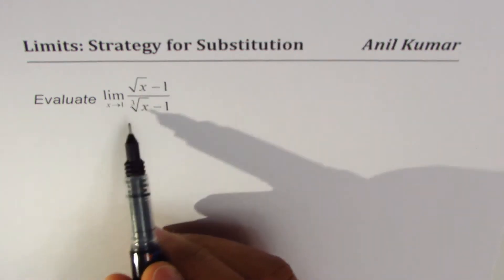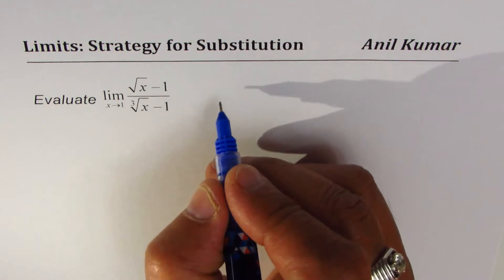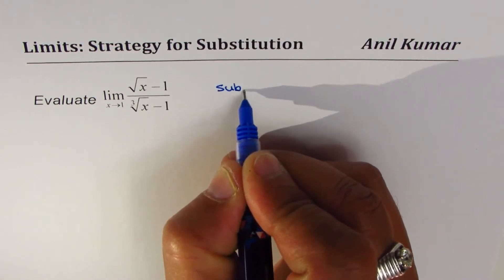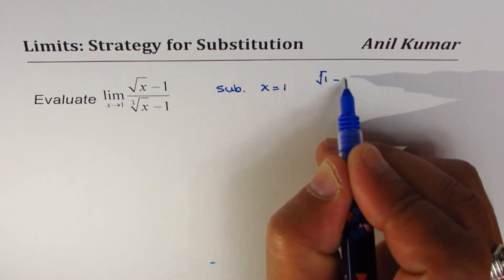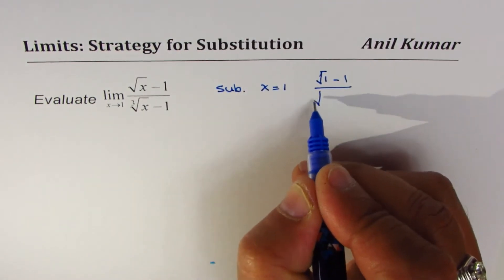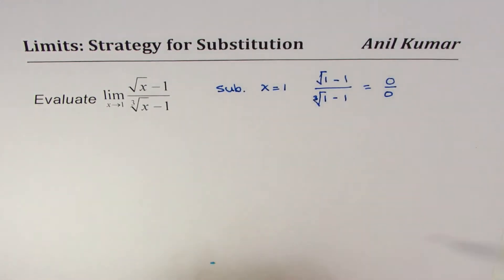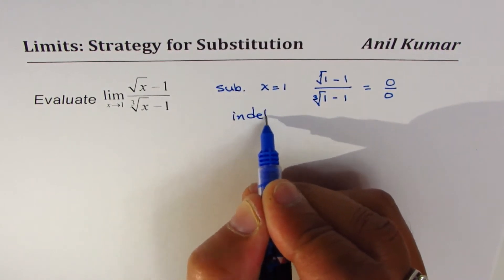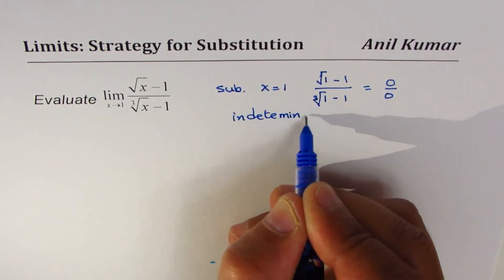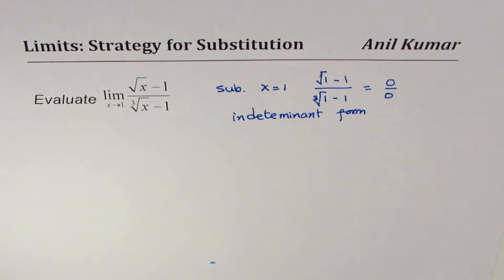You realize that when you substitute x equal to 1, what do you get? You get square root of 1 minus 1 divided by cube root of 1 minus 1, which is 0 over 0.